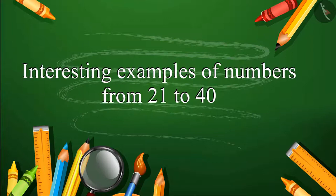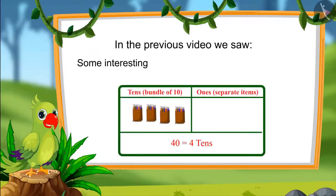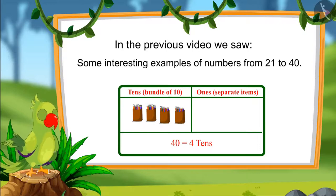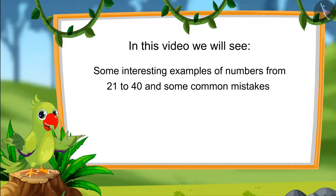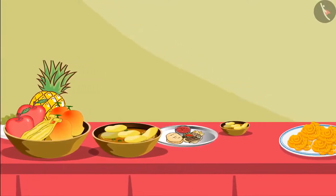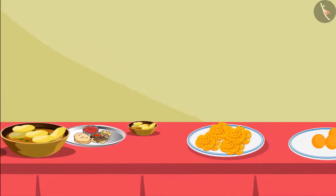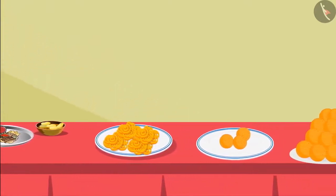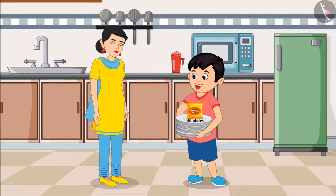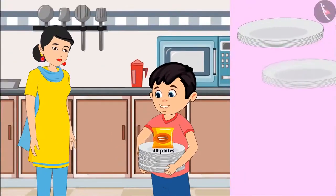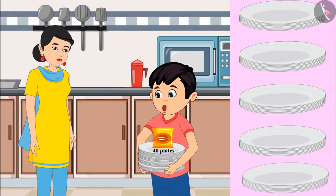Interesting examples of numbers from 21 to 40. Hello, children. In the previous video, we saw some interesting examples of numbers from 21 to 40. In this video, we will see some more interesting examples and learn about some common mistakes which should not be done. Today a lot of guests are coming to Chotu's house. Chotu's mother sent him to the market to get paper plates and spoons. Mummy, I have got the plates and spoons. Chotu, how many plates have you got? Mummy, on this packet it's written 40 plates, meaning 4 groups of 10 plates and another group of 10 plates with it.